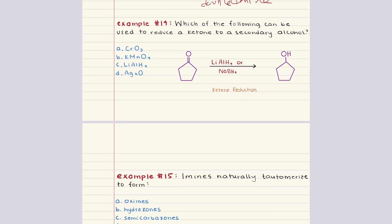Problem fourteen asks which of the following can be used to reduce a ketone to a secondary alcohol. A reducing agent must donate electrons to the carbonyl carbon, breaking the double bond to oxygen and forming a hydroxyl group. Two commonly used reducing agents for this transformation are lithium aluminum hydride and sodium borohydride, which reduce ketones to secondary alcohols by transferring hydride ions. The correct answer is C. Chromium trioxide, potassium permanganate, and silver oxide are all oxidizing agents and would not reduce the ketone.